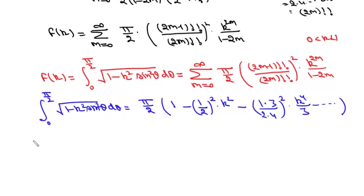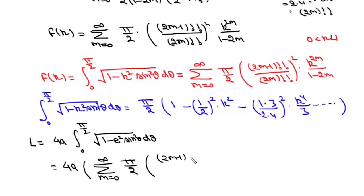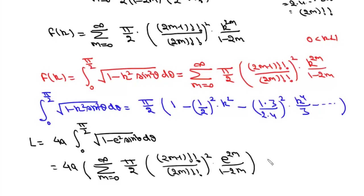Returning to where we started, we know the perimeter of an ellipse is given by 4a times the integral from 0 to π/2 of √(1 − e² sin²θ) dθ. Now that we know the result of the elliptic integral of the second kind, we can write this formula as 4a times the summation over m from 0 to infinity of (π/2)·[(2m−1)!!/(2m)!!]²·e^(2m)/(1 − 2m), which is the formula for the perimeter of an ellipse.